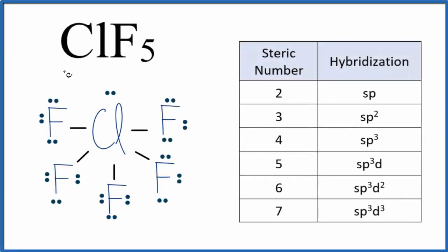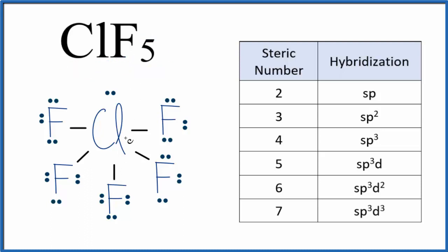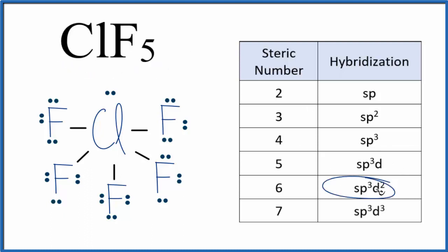When we look at the hybridization for ClF₅ — this is chlorine pentafluoride — we're looking at that central chlorine atom and how its atomic orbitals have mixed to form hybrid orbitals, and how those new hybrid orbitals bond with the fluorine atoms. In short, the hybridization for ClF₅ is sp3d2, and I'll show you two fairly quick ways to figure that out.